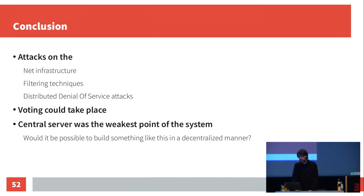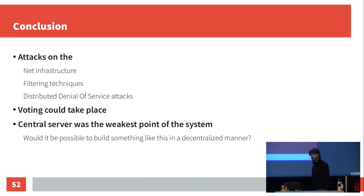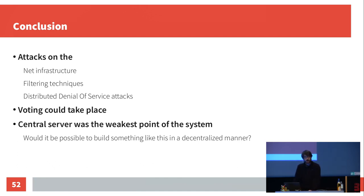On the day of the referendum, we had attacks on the network infrastructure, filtering techniques, and a distributed denial-of-service attack. Despite all these attacks, voting was able to take place. The central server was the weakest point of the system, and I was wondering if it would be possible to build this in a decentralized manner — maybe with blockchain, though I'm not an expert.